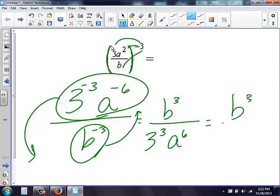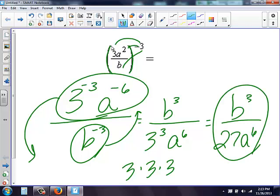Therefore, I get b to the third over, three to the third is the same thing as three, times three, times three. Three times three is nine, times another three. I get 27, and I still have a to the sixth. Cannot simplify that any farther, so there's my answer.